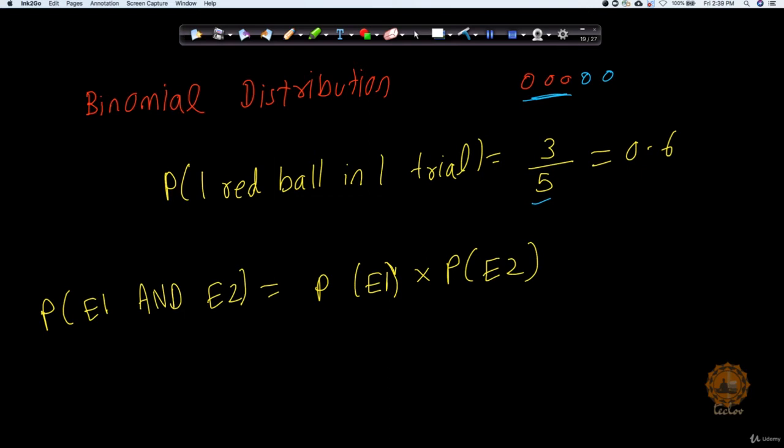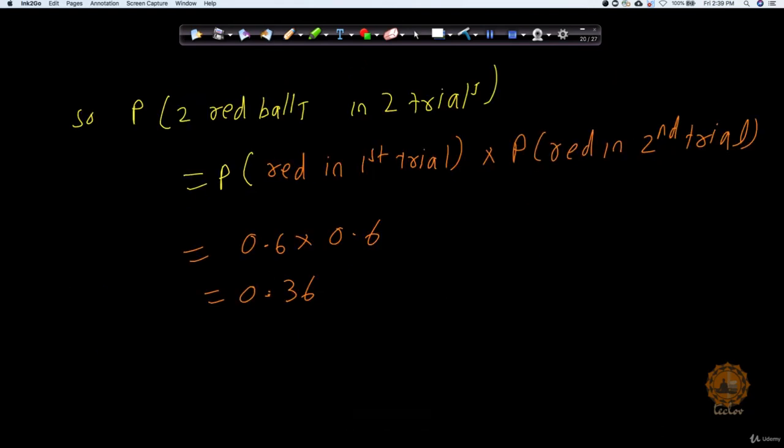In probability, there is a very interesting multiplicative theorem, which states that if I have two events and I want probability of event one should happen as well as event two should happen, then that is equivalent to stating that probability of event one times probability of event two. How can I use this on this particular example? Let's say I want the probability that I get two red balls in two trials. That means the first time I pull up a ball, I should get red. Second time I pull up the ball, I should again get red. So it becomes probability of red in the first trial times probability of red in the second trial. Probability of getting red in the first trial is 0.6. Probability of getting red in the second trial, because we put that ball back, is again 0.6. So total probability is going to be 0.36 in this case.